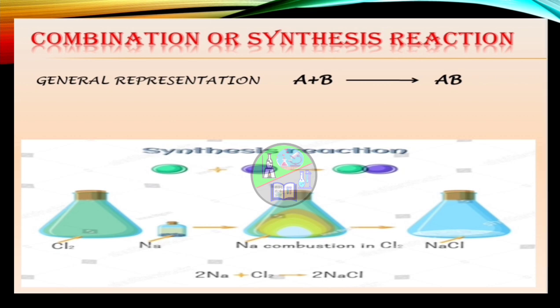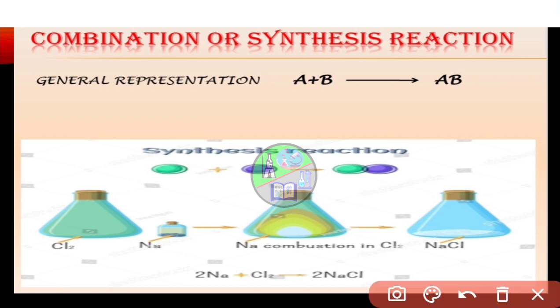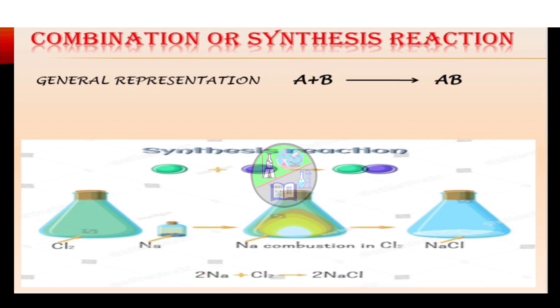First is combination or synthesis reaction. A chemical reaction in which two or more substances combine to form a single substance is called a combination or synthesis reaction. Its general representation is A + B → AB. For example, when sodium reacts with chlorine, it combines to form sodium chloride. Now let's see an experiment of combination reaction.